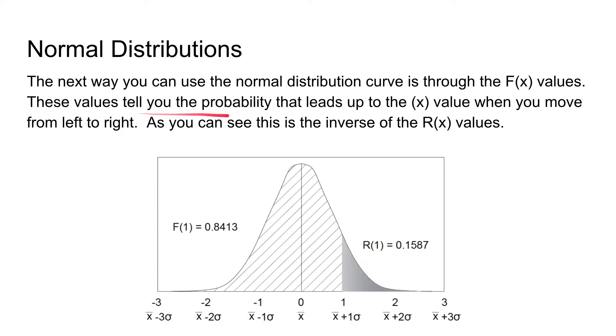The next way you can use the normal distribution curve is through the uppercase F function values. And these values tell you the probability that leads up to the x value that you have. So as you can see, it's the inverse of the uppercase R values. So for F(1), the values leading up to one standard deviation is 84.1 percent.